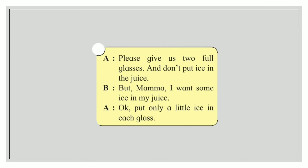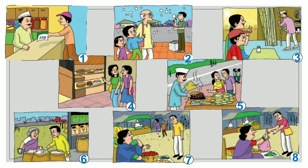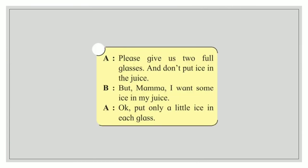Next conversation — A: 'Please give us two full glasses and don't put ice in the juice.' B: 'But mama, I want some ice in my juice.' A: 'Ok, put only a little ice in each glass.' Picture number 3 — the mother is sitting with her son and giving an order of two glasses. You can see sugar cane in the shop. So we will put number 3 to this conversation.